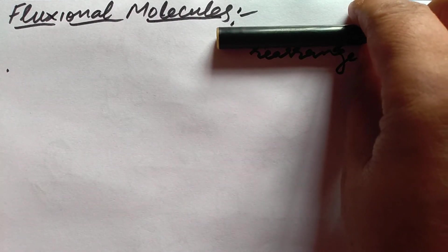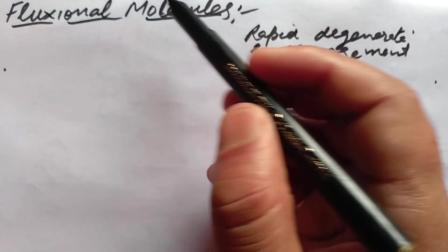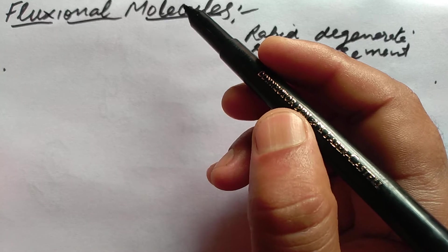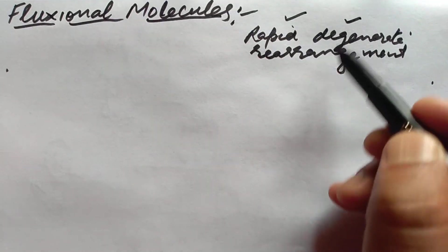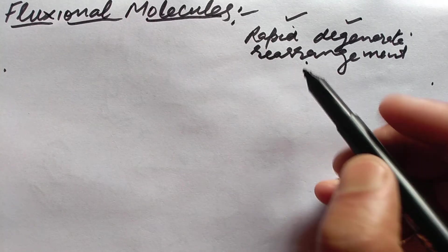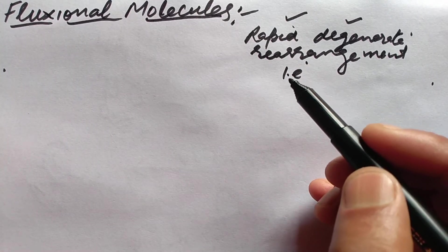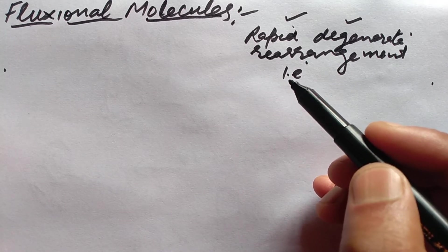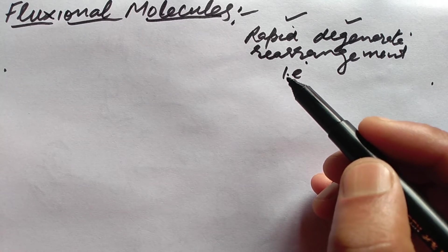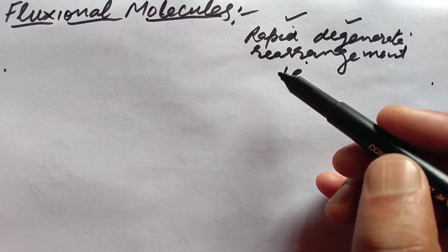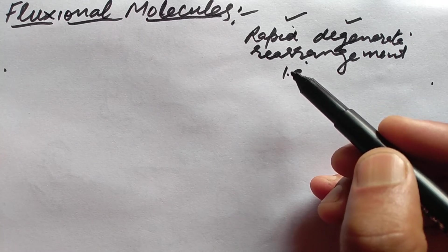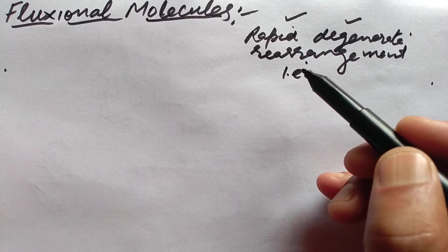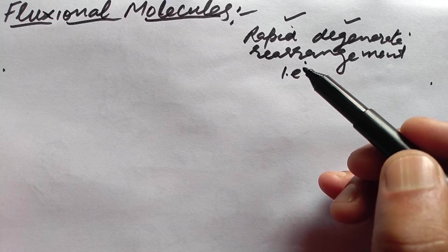Hello dear students, today we are going to discuss fluxional molecules. Molecules which undergo rapid degenerate rearrangement — that is, a rearrangement which gives a product identical to the starting material — are called fluxional molecules.